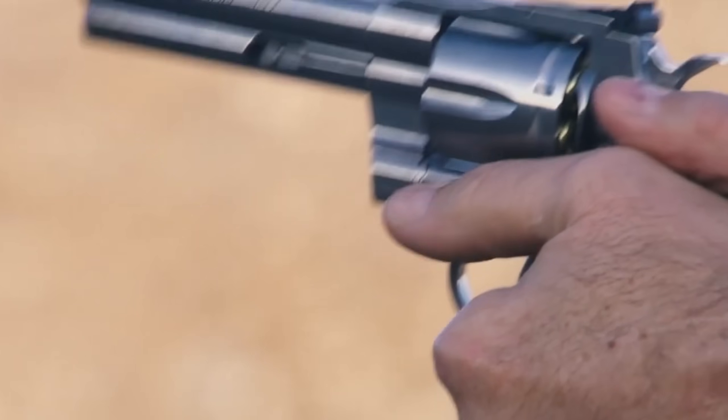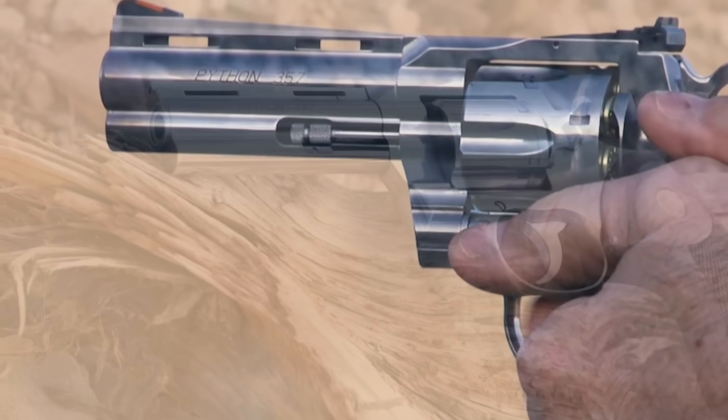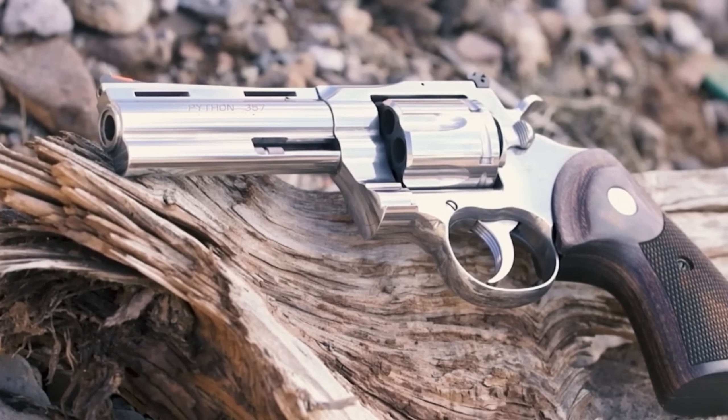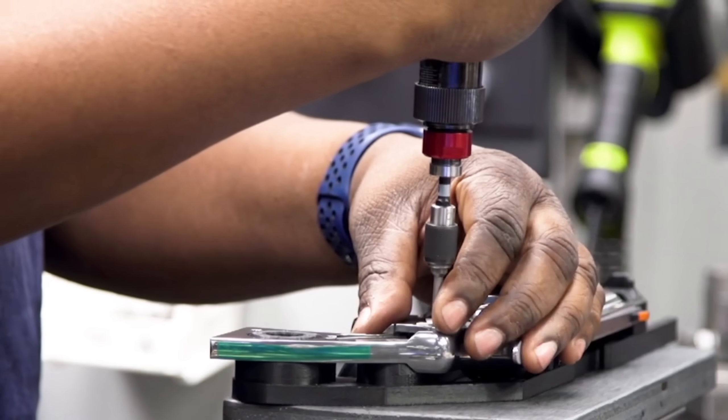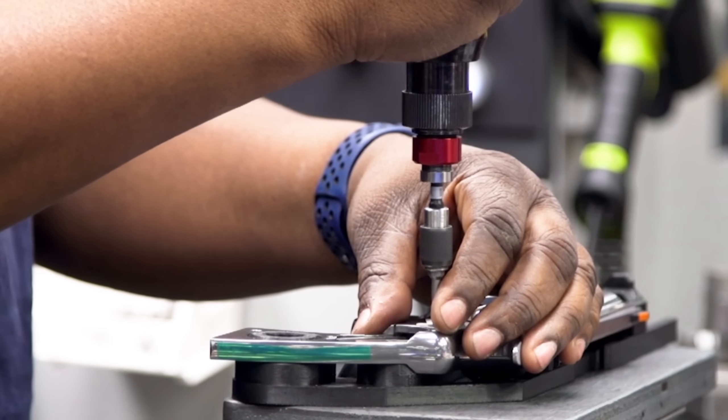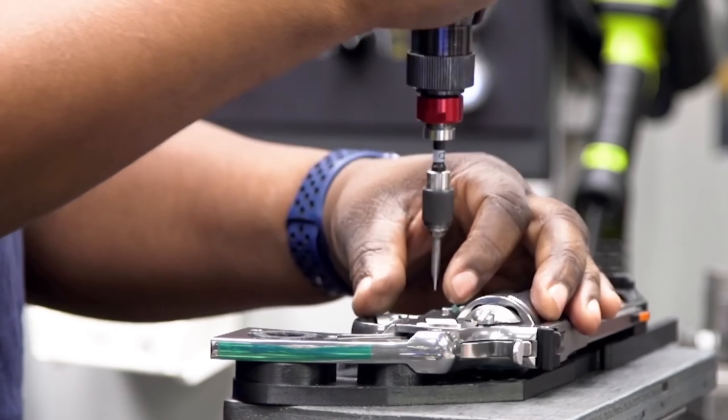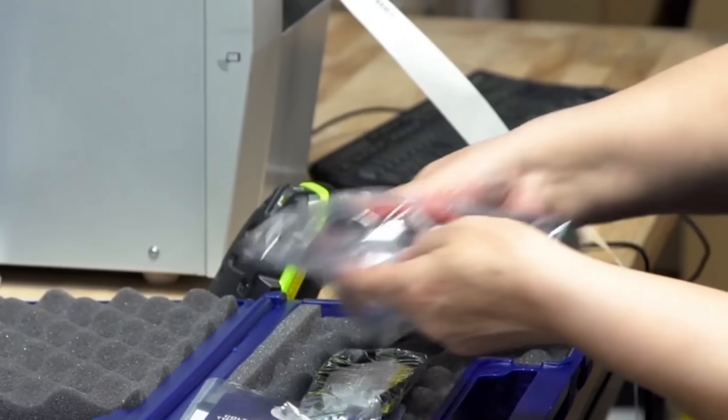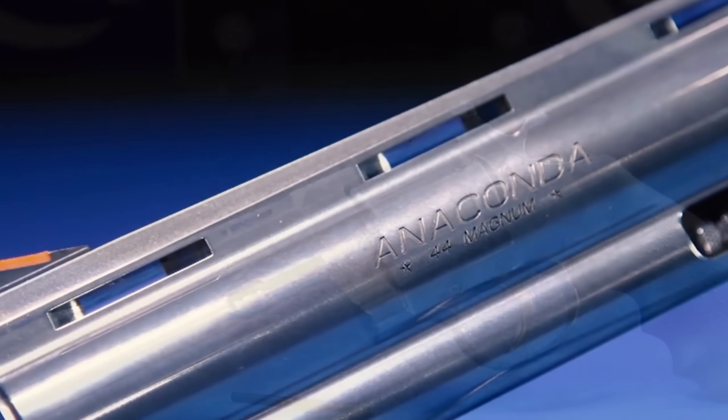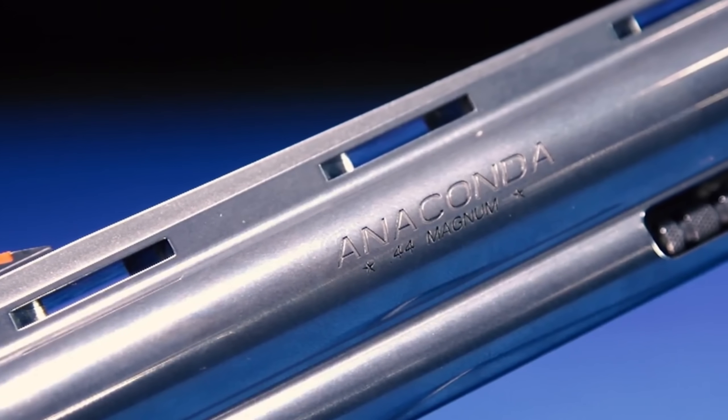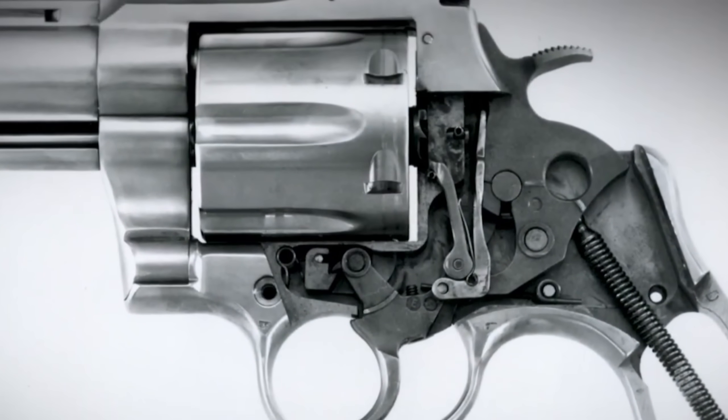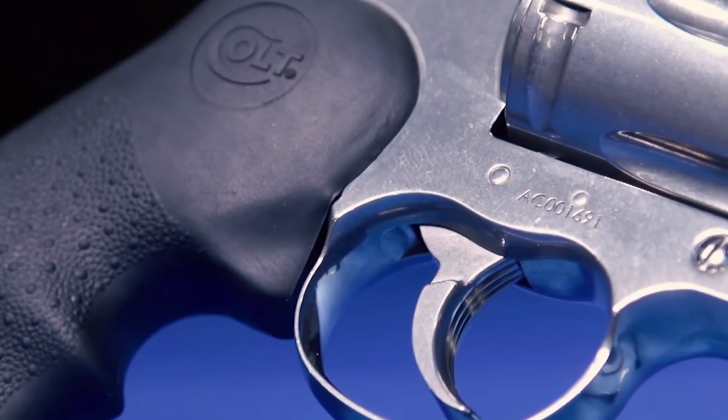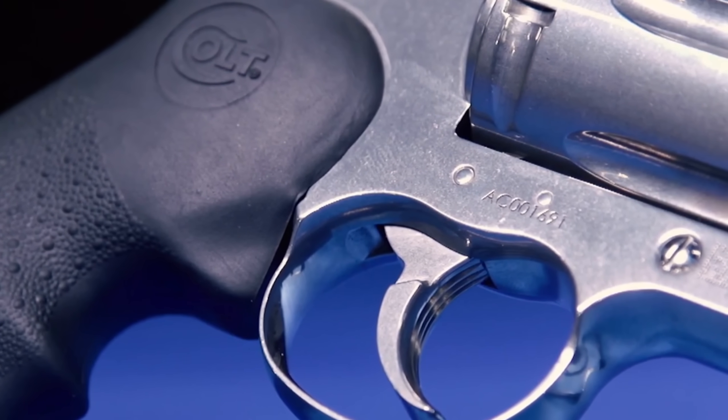Every revolver is the result of a detailed multi-step process. Material preparation starts with selecting and inspecting steel blocks for strength and stability. Cylinder machining follows, where each chamber is cut and measured to tight tolerances for safety and accuracy. Finally, careful assembly brings together the frame, cylinder and barrel using specialized tools and checks to ensure reliable operation. From steel block to finished firearm, each stage demands precision to meet safety and performance standards.